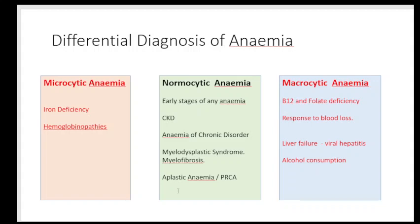Macrocytic anemia occurs when the RBC size is slightly larger than the lymphocytes. The major differential diagnoses to keep in mind are B12 or folate deficiency, liver failure, and alcohol consumption. When there is acute blood loss, the body pushes more immature RBCs or reticulocytes into the blood smear. Reticulocytes are slightly larger than normal RBCs, so you can find a slight increase in RBC size, but the major thing to evaluate for when you see macrocytosis is B12 and folate deficiency.